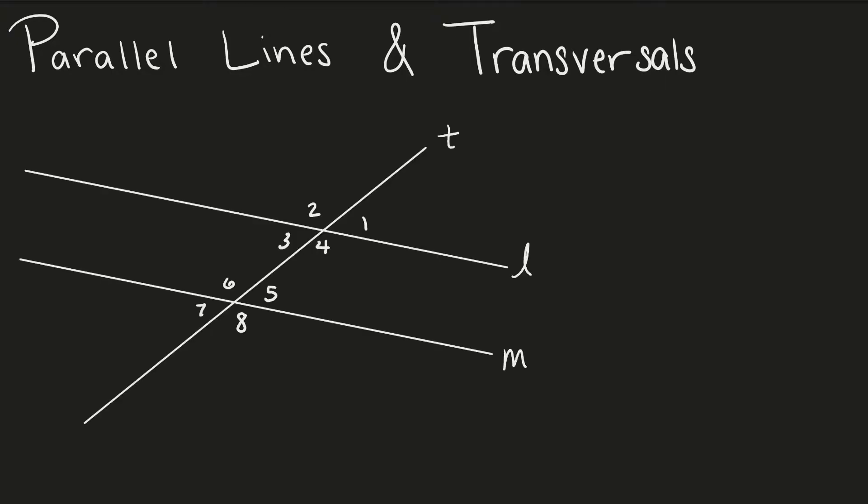Two parallel lines and a transversal looks like this. The two lines, L and M, will never touch — they are parallel to each other. The transversal intersects both lines. There are relationships between the angles on these lines. Using these relationships we can identify what angles are congruent to each other and find the value of an angle using the relationship.